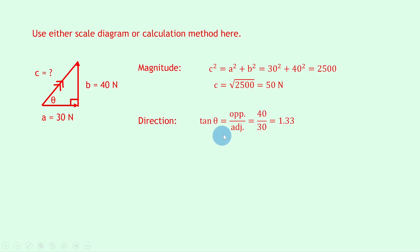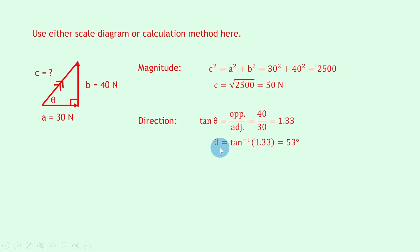For direction we use tan theta. Tan theta equals opposite over adjacent — opposite the angle is 40 and adjacent to the angle is 30, so we've got 40 over 30 which is 1.33. To find theta we do inverse tan of 1.33 to get 53 degrees. But remember, that's just the angle so far — we need to express it with compass points or bearings.